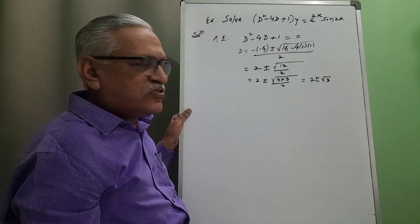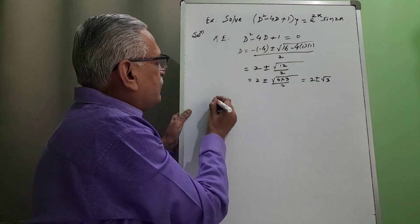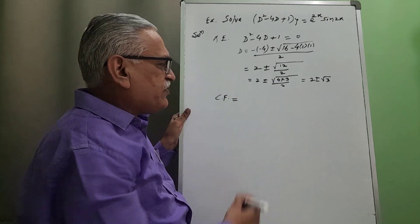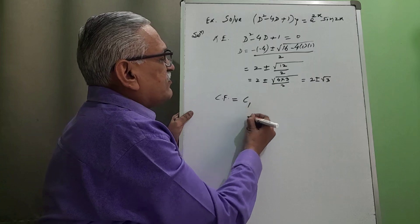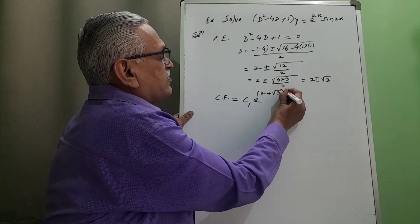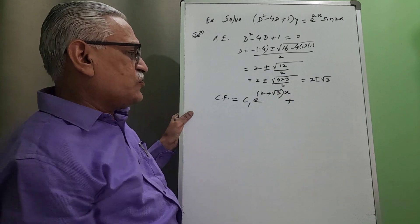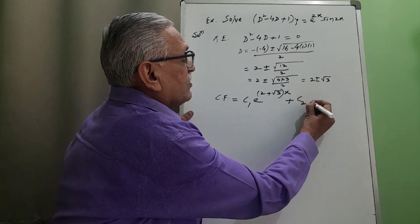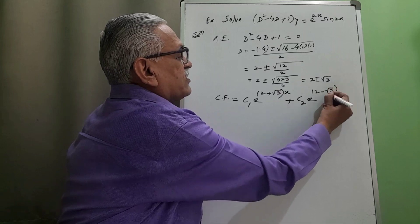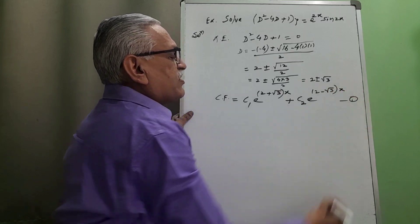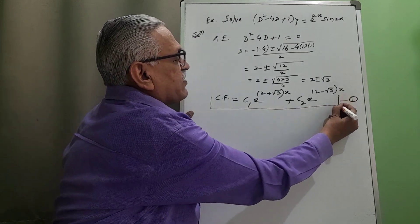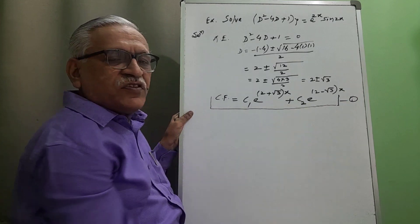The roots are not imaginary; the roots are real and distinct. Therefore the complementary function, since the roots are not integer quantities, is CF equals c1 e raised to (2 plus root 3) x plus c2 e raised to (2 minus root 3) x. This is equation number one — the first part of the solution called the complementary function, containing two arbitrary constants c1 and c2.